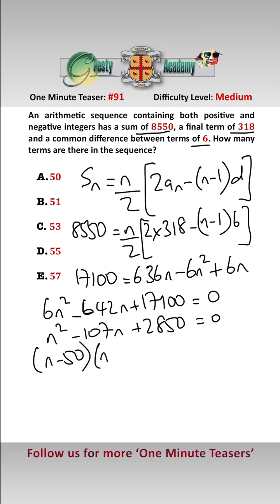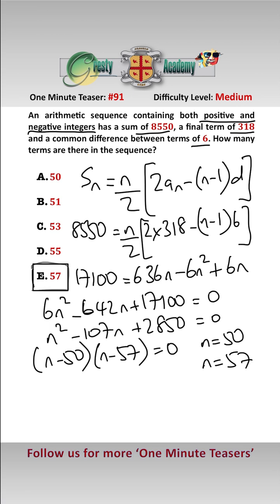Factorising this, we get (n minus 50)(n minus 57) equals 0. So on first glance, we get n equals 50 and n equals 57 as two solutions. But in actual fact, given that the sequence contains positive and negative integers, n equals 57 is correct — because the first term with 50 terms would be 24, whereas the first term with 57 terms is minus 18, which satisfies the condition of having both positive and negative integers.